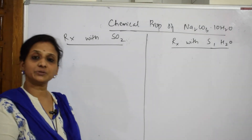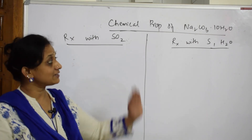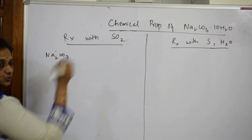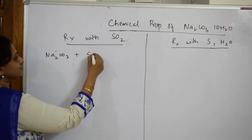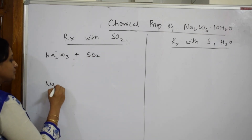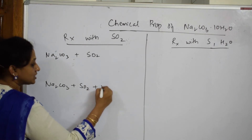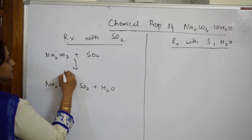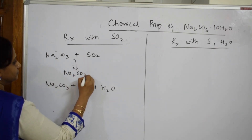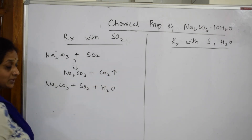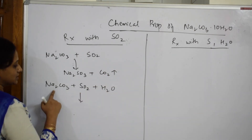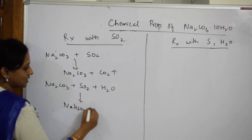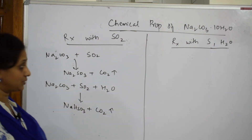Next, the reaction of sodium carbonate with sulfur dioxide: Na₂CO₃·10H₂O combining with SO₂ gives Na₂SO₃ plus CO₂. However, if water is also present along with SO₂, the product changes — you get NaHSO₃ (sodium bisulfite) plus CO₂. This distinction is important to remember.